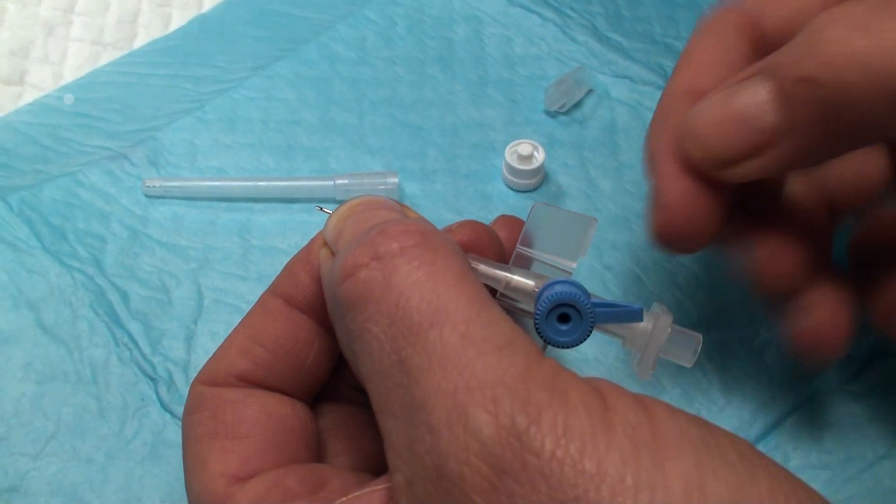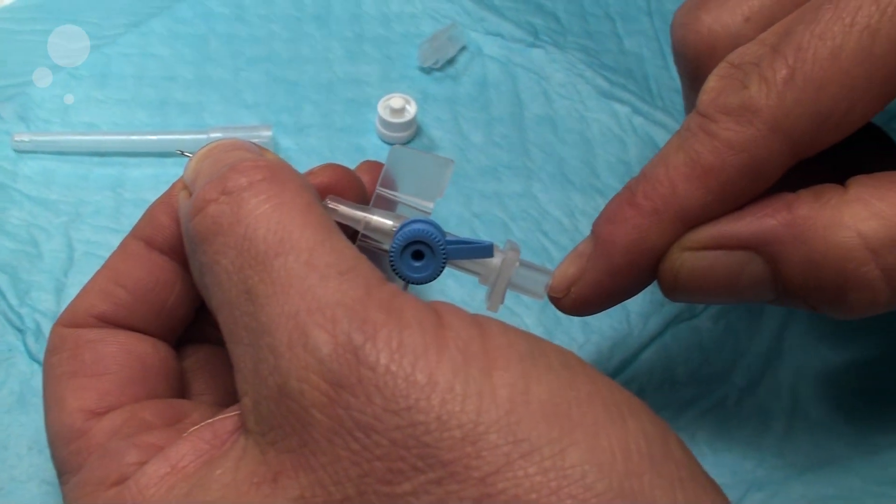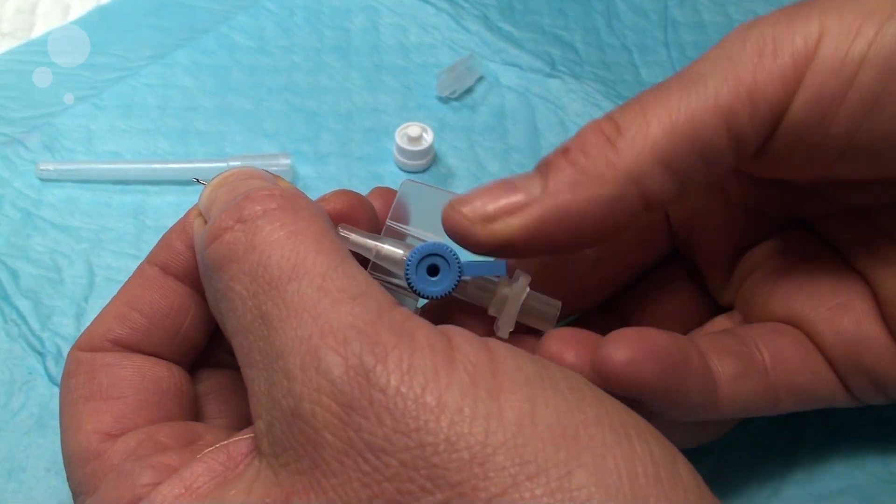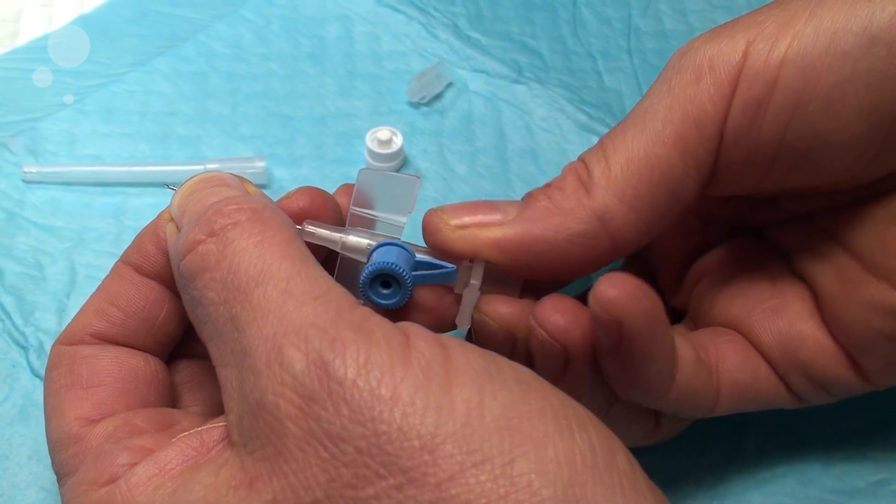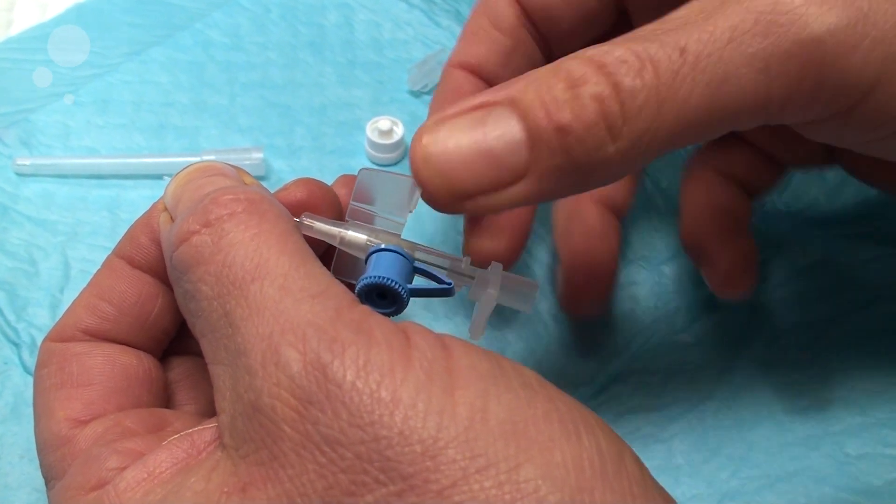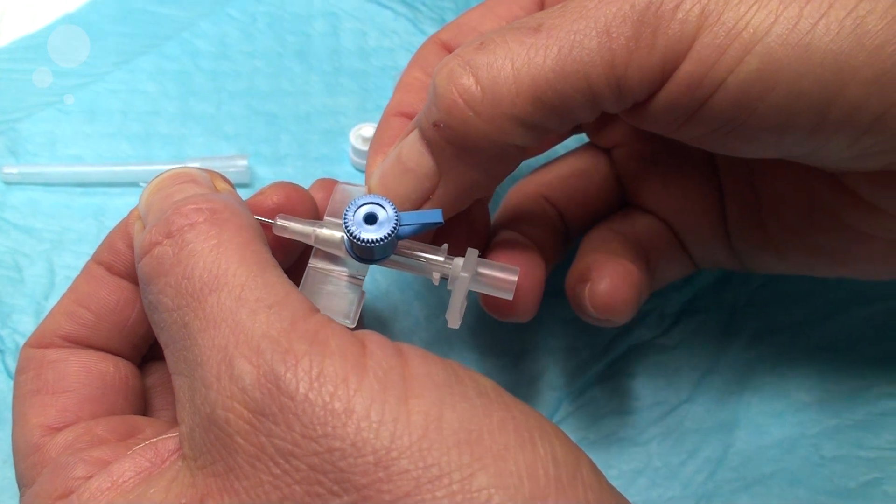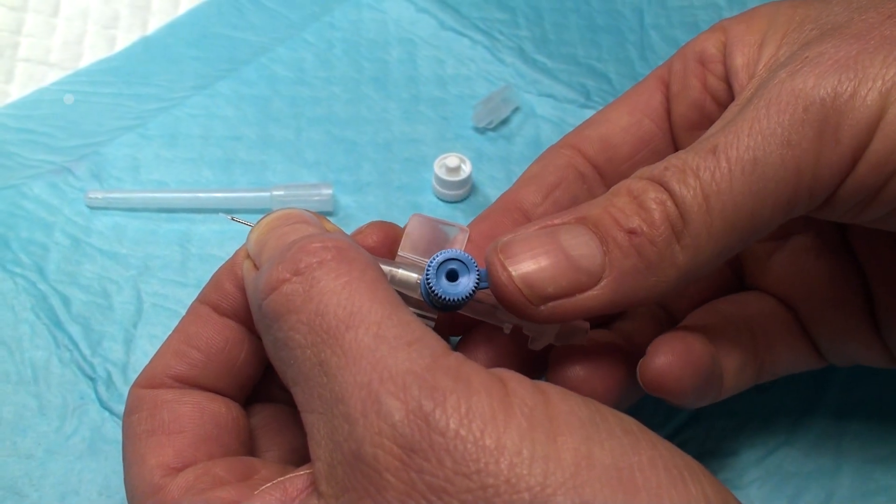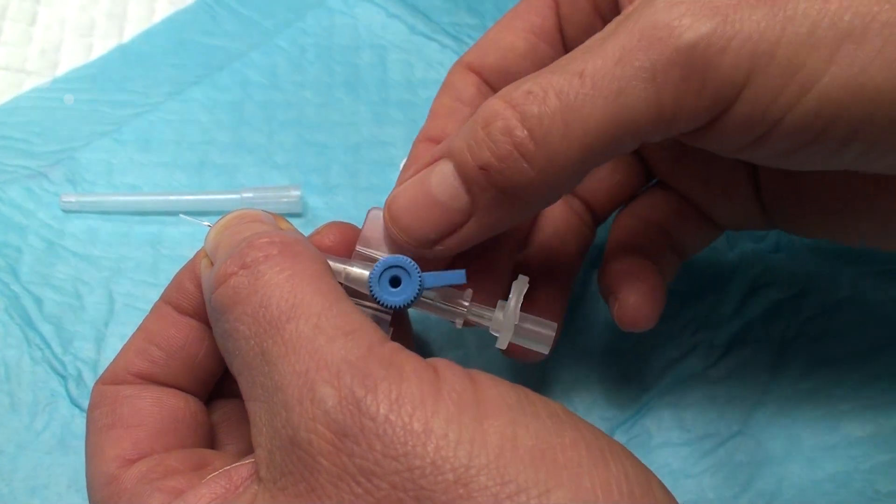When you are inside the vein, blood will come out at the base of the Venflon, and you will pull slightly back to have the soft tip of the catheter inside the vein. Then you can further introduce it, keeping the needle inside the catheter as you put it longer into the vein.